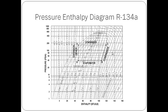Then it moves to point C where the compressor increases the pressure to the discharge pressure of 200 psi absolute. This movement occurs at constant entropy. Next, the refrigerant moves from C to D where the refrigerant vapor loses enthalpy until it reaches a saturated liquid with zero degrees of subcooling.